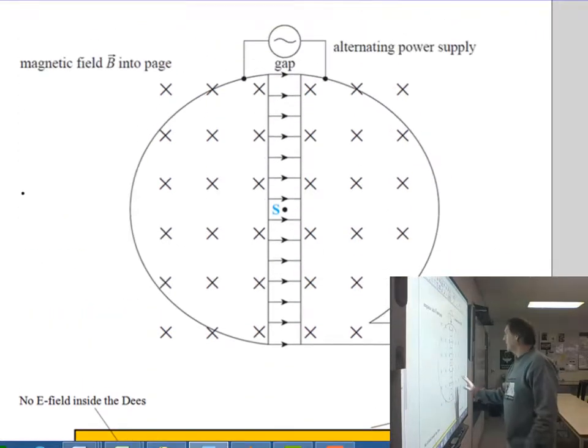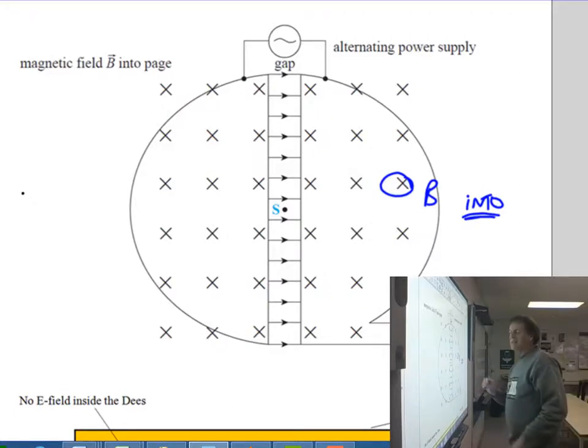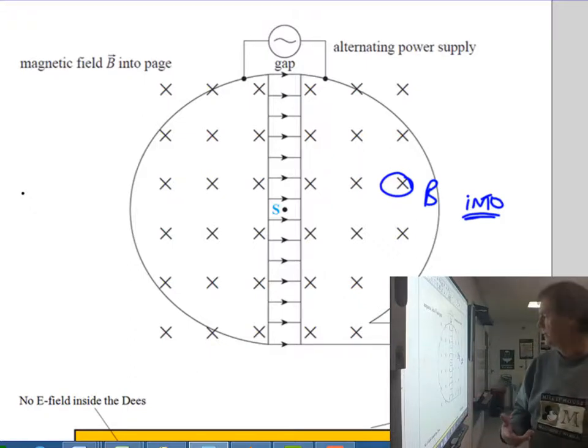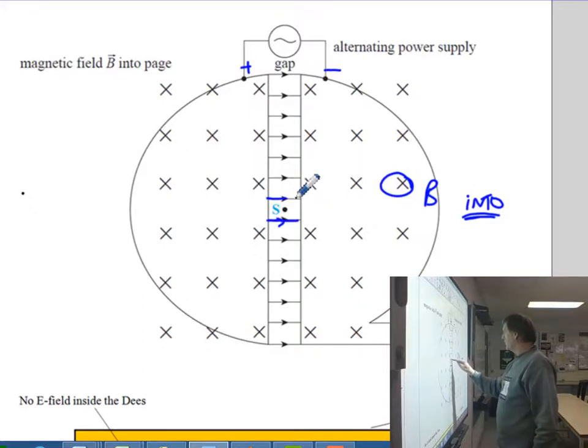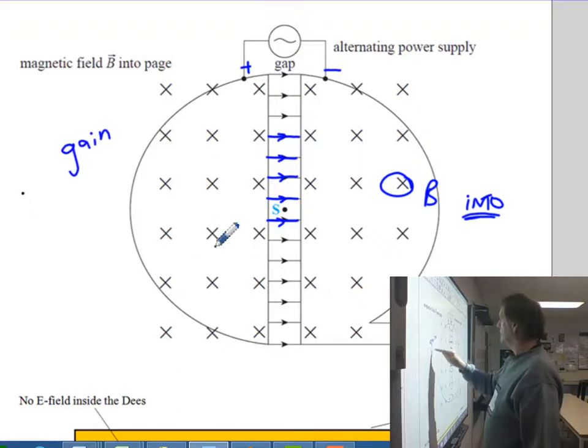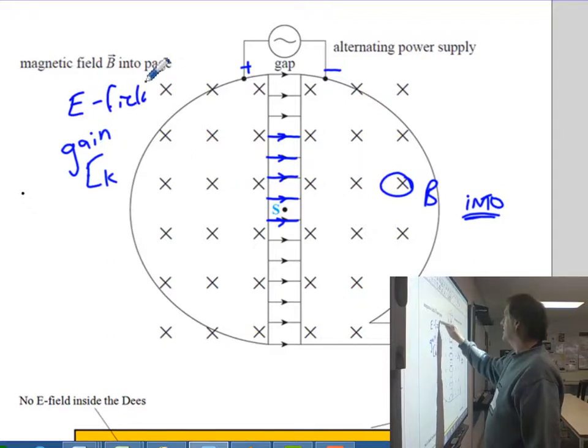And running through the Ds here, we've got a magnetic field which is into the board in this case. So that's indicated here by these crosses. So the magnetic field is into the board, uniform throughout. Now inside these copper Ds, they're metal electrodes and they're hollow, so there'll be no electrical field. But if you make one of these a positive charge here, and one a negative, between the Ds here, you'll find a region of the electrical field which is uniform.